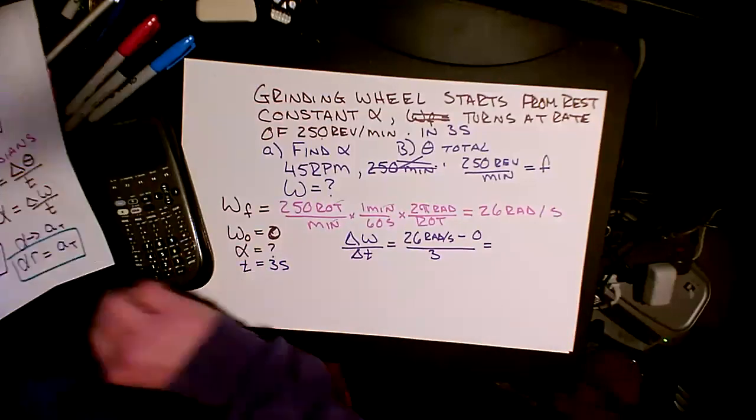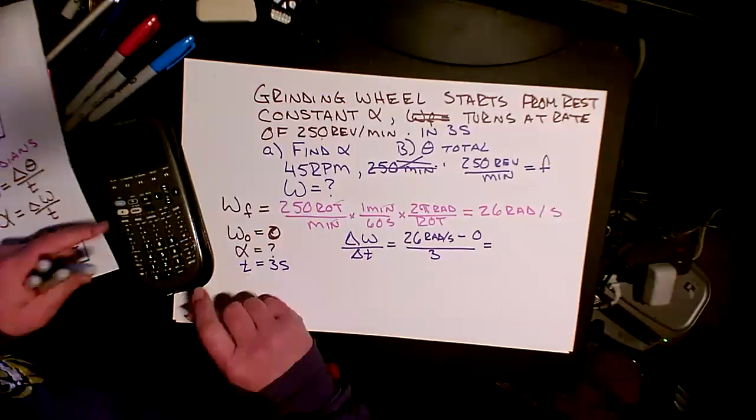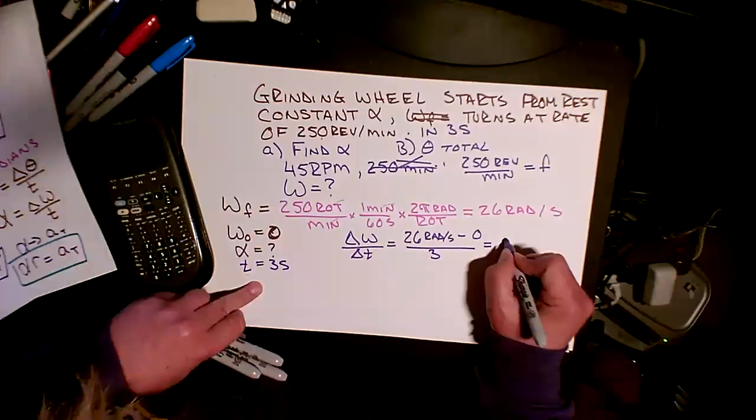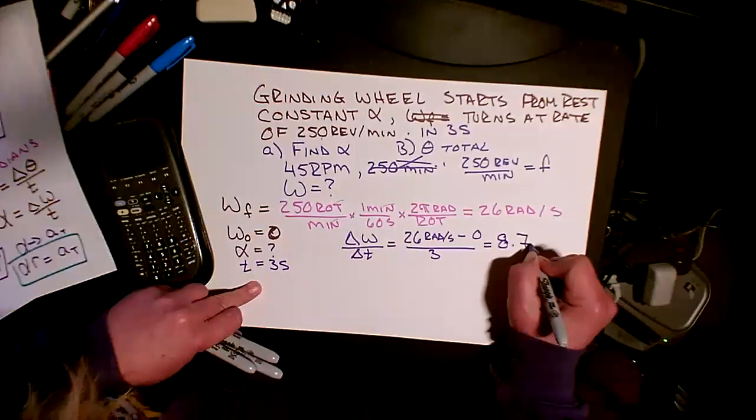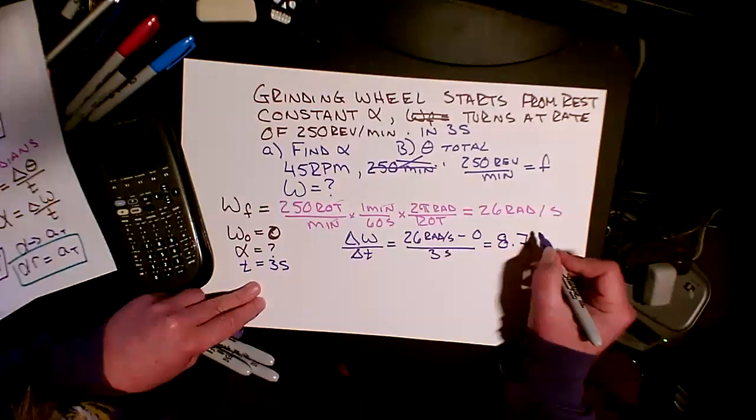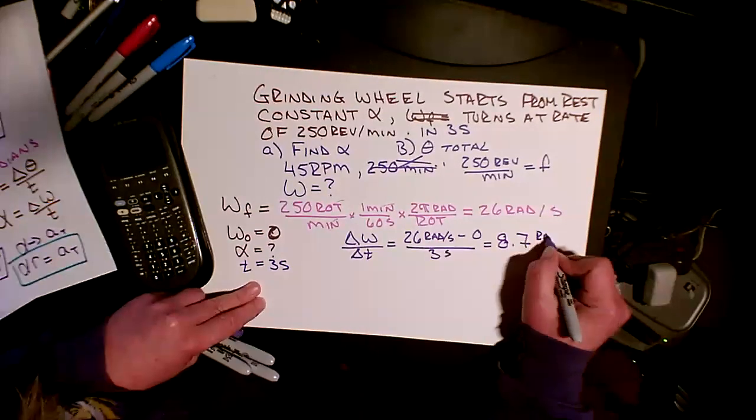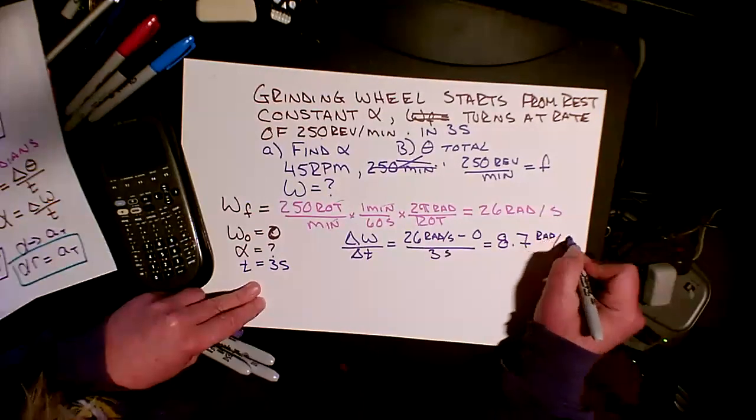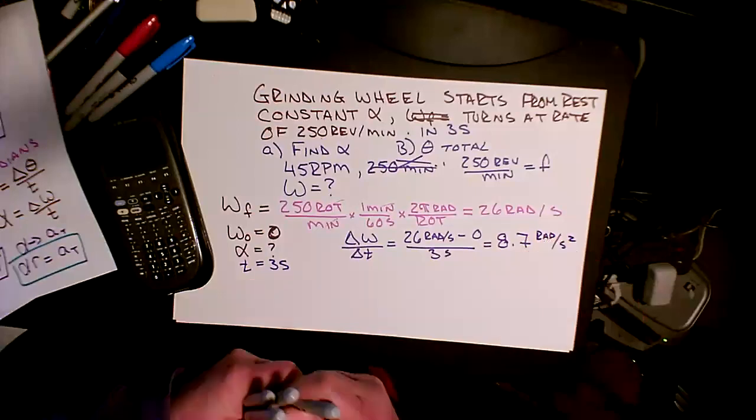Oh, come on, computer. There we go. 8.7. Now, what is this units? This is radians per second over seconds. So this is radians per second squared. So I've answered the first one.